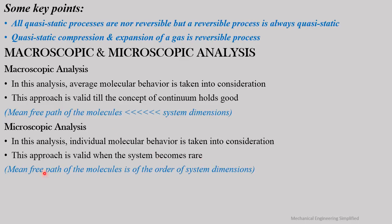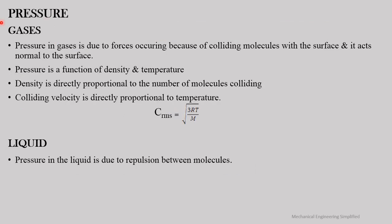When the system becomes rarefied — meaning the mean free path of the molecules becomes of the order of the system dimensions — individual molecular behavior must be taken into consideration, and that is known as microscopic analysis. Note that properties like pressure and stress are valid only when the concept of continuum holds; otherwise, a rarefied gas theory must be used.